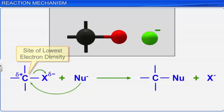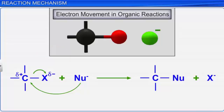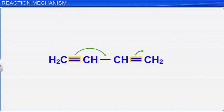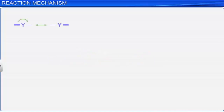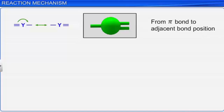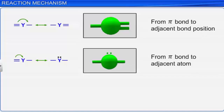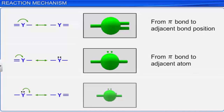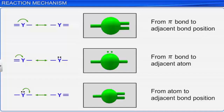The movement of an electron pair in organic reactions is denoted by a curved arrow. The curved arrow starts from the point where an electron pair is shifted and ends at the final location where the pair of electrons may move. For example, electron flow from a pi bond to the adjacent bond position, from a pi bond to the adjacent atom, or from an atom to the adjacent bond position may be represented accordingly.